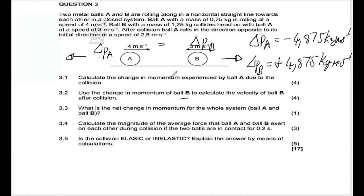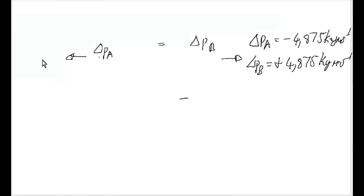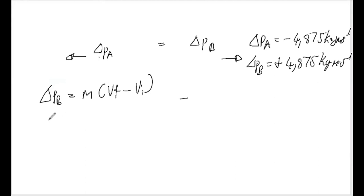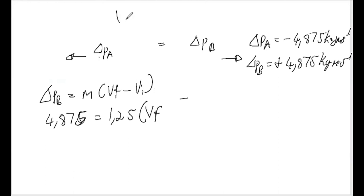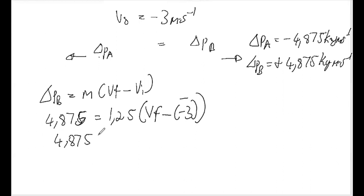Now that we have the change in momentum for ball B, we can calculate the velocity. Change in momentum for ball B equals mass times (vf minus vi). We have 4.875 on the left, the mass is 1.25, the final velocity is unknown, and the initial velocity is negative three meters per second — negative because ball B was going to the west. So we have 4.875 equals 1.25 times (vf minus negative 3), which gives 4.875 equals 1.25 times (vf plus 3). Divide both sides by 1.25.